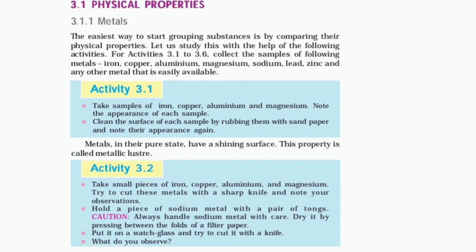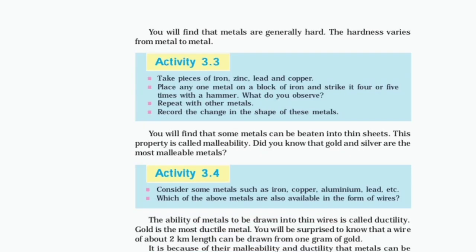Activity 3.2: Take small pieces of iron, copper, aluminium and magnesium. Try to cut these metals with a sharp knife and note your observations. Hold a piece of sodium metal with a pair of tongs. Caution: always handle sodium metal with care. Dry it by pressing between the folds of a filter paper. Put it on a watch glass and try to cut it with a knife. What do you observe? You will find that metals are generally hard. The hardness varies from metal to metal.